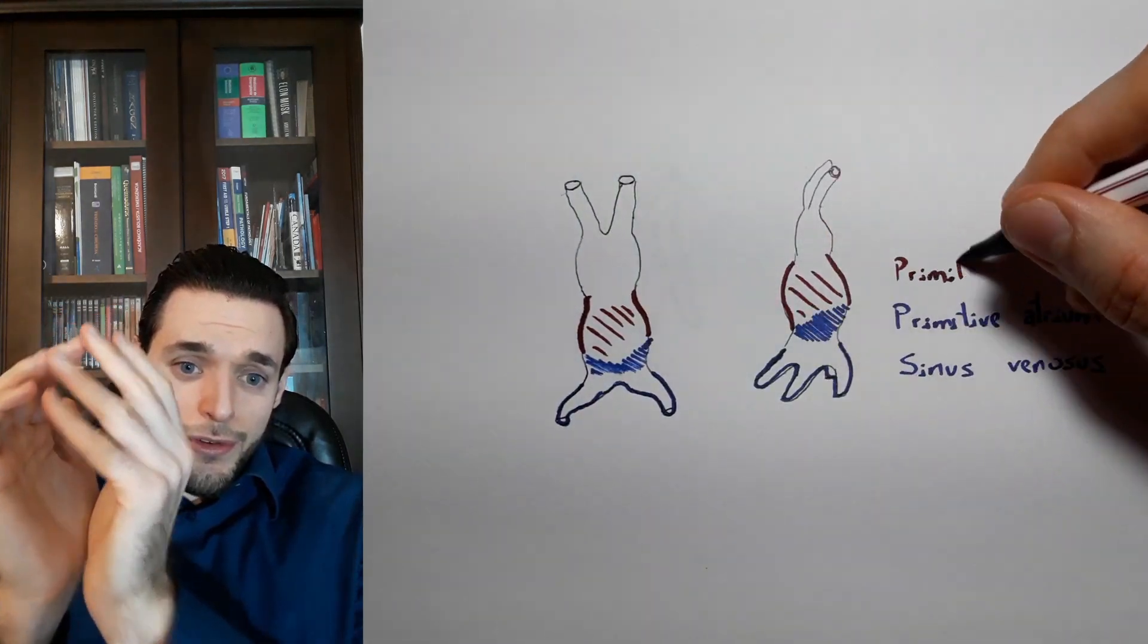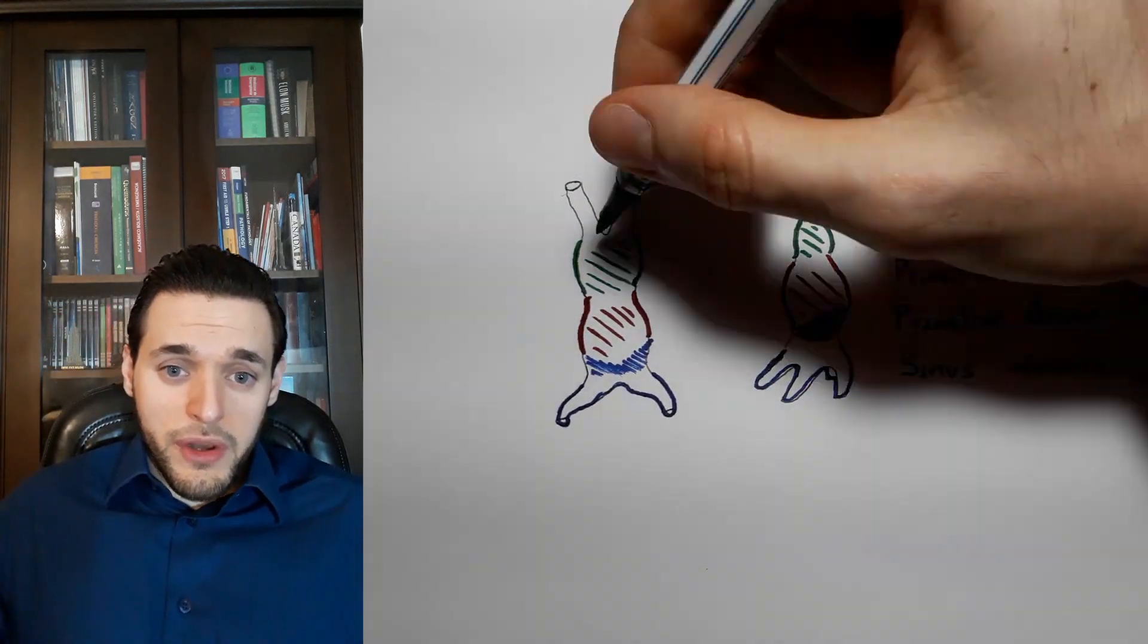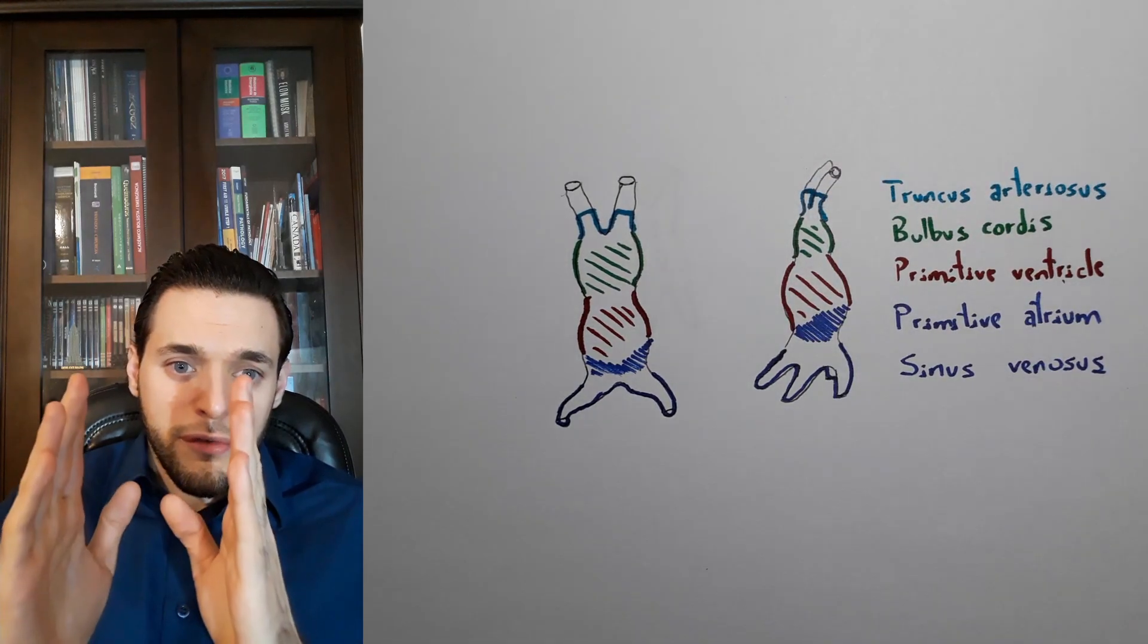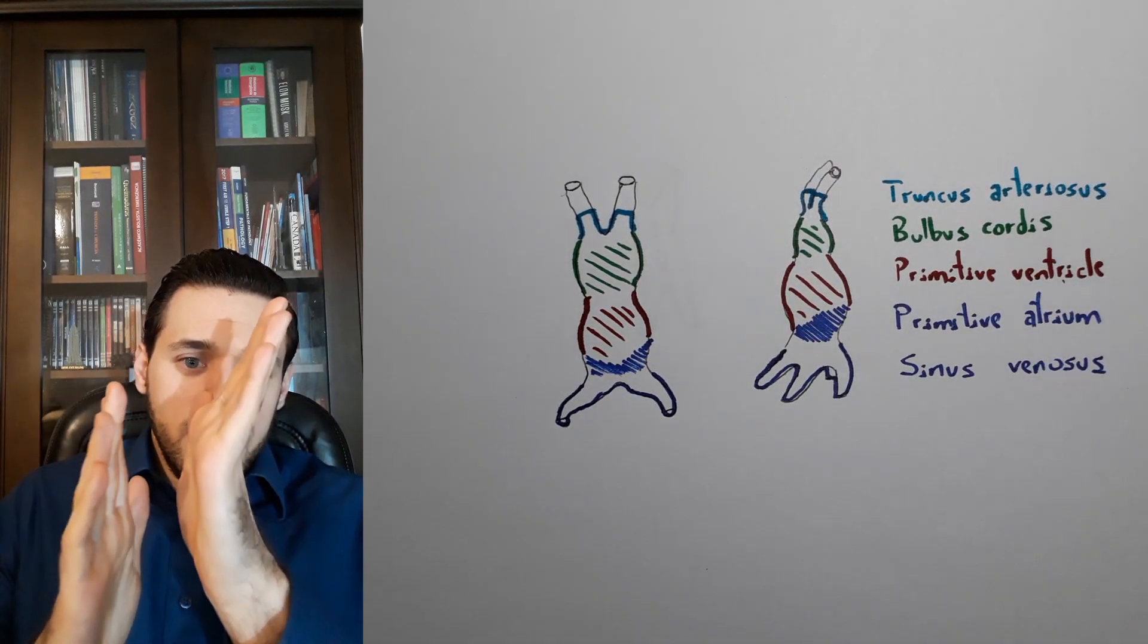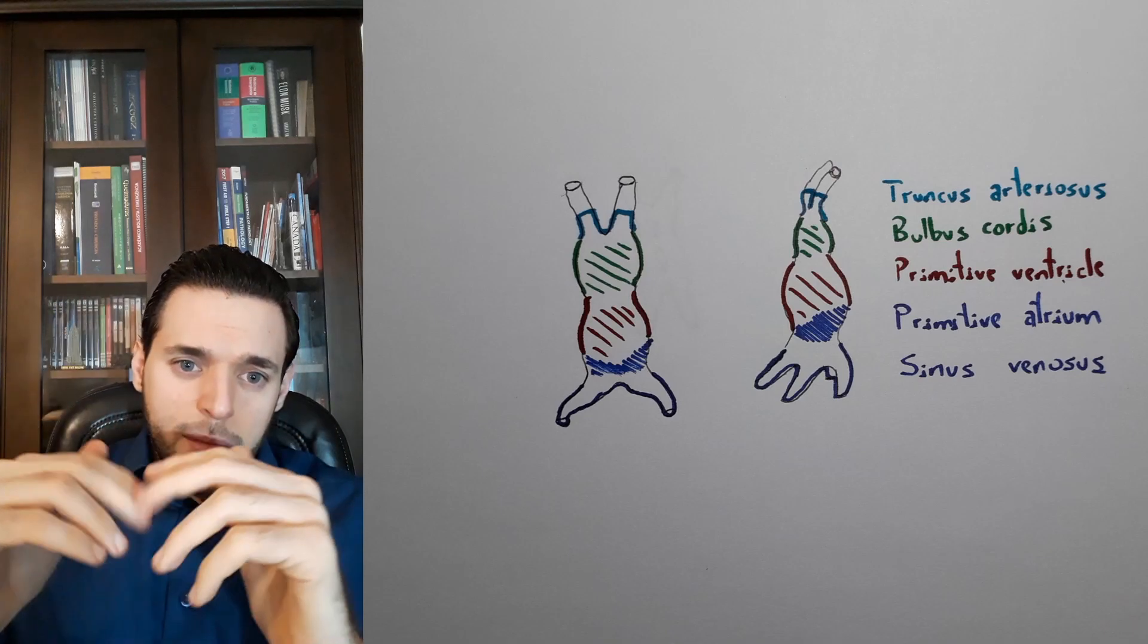and the truncus arteriosus, the structure derived from neural crest cells that's going to give rise to the aorta and the pulmonary trunk and the semilunar valves.